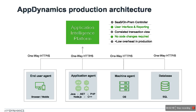Together, these agents work to automatically discover transactions, tag them, and trace their execution path. All this requires no deep application knowledge from your operations team, no code changes in your application, and has less than 2% overhead on your systems.